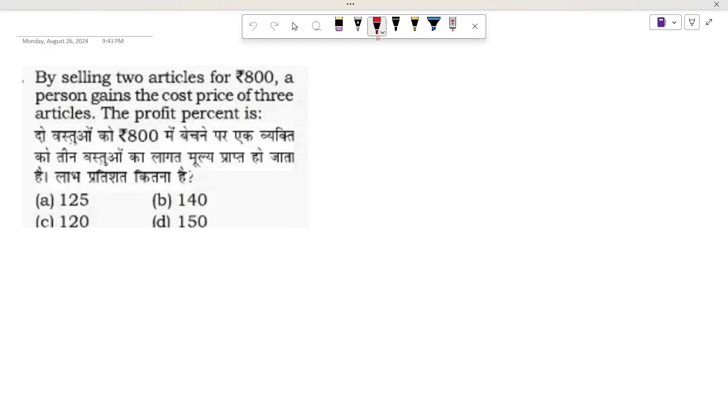In this question, we are given that by selling two articles for ₹800, a person gains the cost price of three articles. By selling two articles for 800, this is the cost price of two articles.